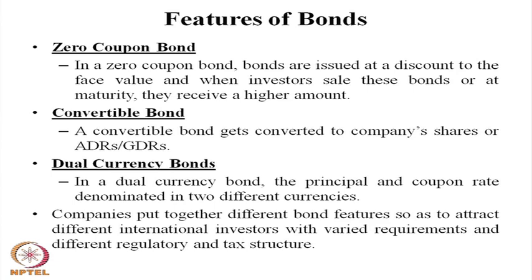Companies put together different bond features to attract different kinds of investors. A company may go for a fixed coupon bond, a dual currency bond, a convertible bond, a zero coupon bond, or a floating coupon bond with a mix of floor and cap. All these features are combined in a bond issue to attract investors. Looking at the economic scenario, currency markets, and international financial markets, different companies issue different kinds of bonds to raise capital in the international market.